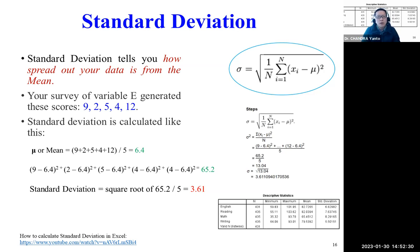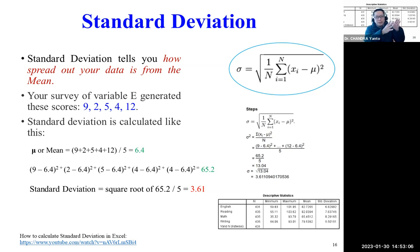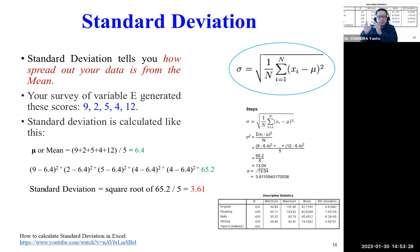What does standard deviation tell you? It tells you how varied your data is. For example, you may be interested in how often it rains in a city you want to visit for a holiday. If a city has a very large standard deviation for rainfall, you could conclude it is highly variable and hard to predict. Compared to another city with a lower standard deviation, where the range between raining a lot and raining little is not very large. Standard deviation shows you how spread out your data is.